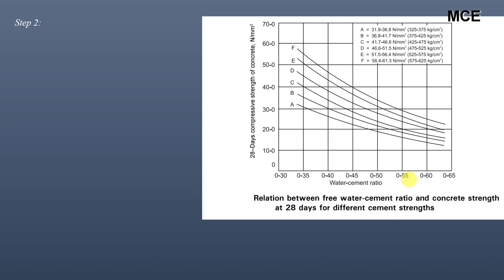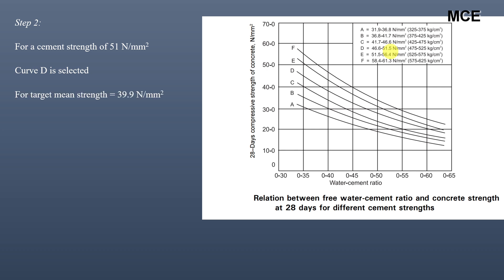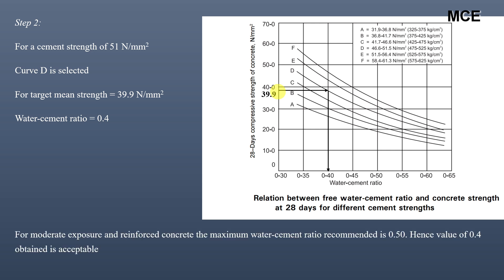To find the water-cement ratio, we use the chart between 28-day compressive strength and water-cement ratio. Since our cement strength is 51 N/mm², curve D is selected. For a target mean strength of 39.9 N/mm², drawing a horizontal line cuts curve D, and a vertical line gives a water-cement ratio of 0.4. For moderate exposure in reinforced concrete, the maximum IS code value is 0.5, so 0.4 is acceptable.